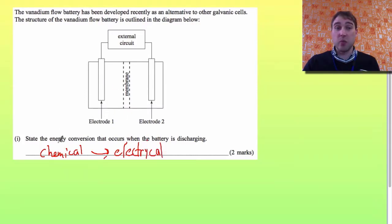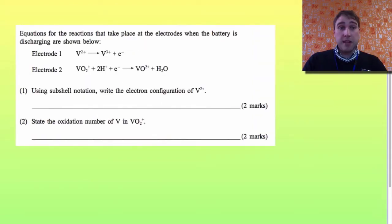So we're breaking down one electrode that's turning the chemical energy in bonds into electrical energy that we're using in the external circuit. Then we're on to the next bit.